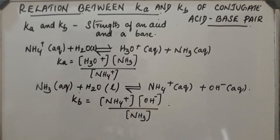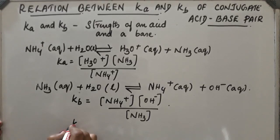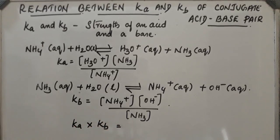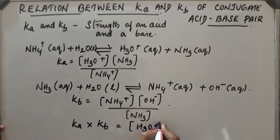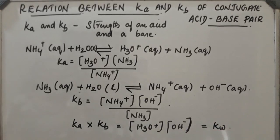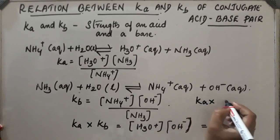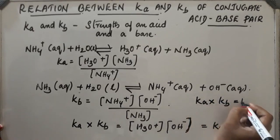Now what happens if we multiply Ka and Kb? After cancellation, we will get the product [H3O+] into [OH-]. We know the concentration, the product of these two concentrations will be equal to Kw. So we got a relation that is Ka × Kb = Kw.